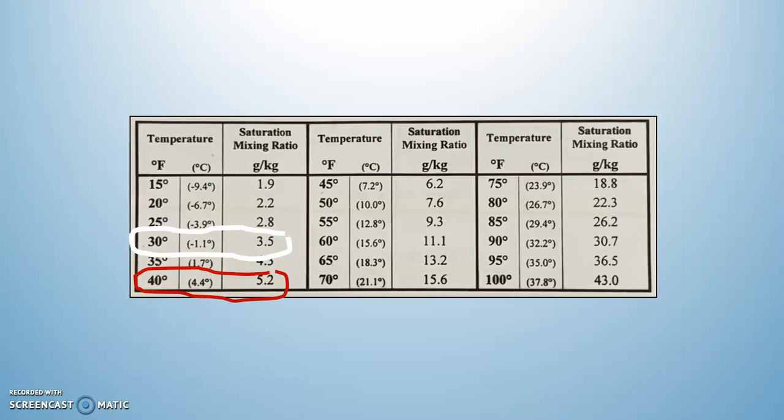If we know the mixing ratio is 3.5 grams per kilogram, we also know using this graph that the dew point temperature is 30 degrees. So that means in order for that air to become saturated, the air temperature would have to drop down 10 degrees, going from 40 degrees down to 30 degrees. At that point, all the numbers would be the same.